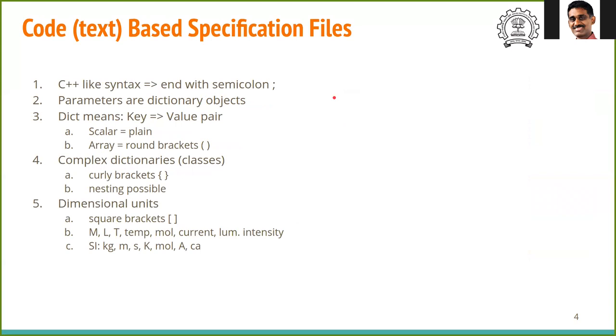Now let us see how the files are written. As mentioned earlier, the input files for OpenFOAM are in plain text format. The syntax is similar to C language - each statement ends with a semicolon. All the parameters are represented in what is known as a dictionary object. A dictionary object contains a key and a value pair. The key is a string word and the value can be a scalar or a multidimensional array. In this example, the word type is the key and the value assigned to it is the variable called fixed value, which is a scalar.